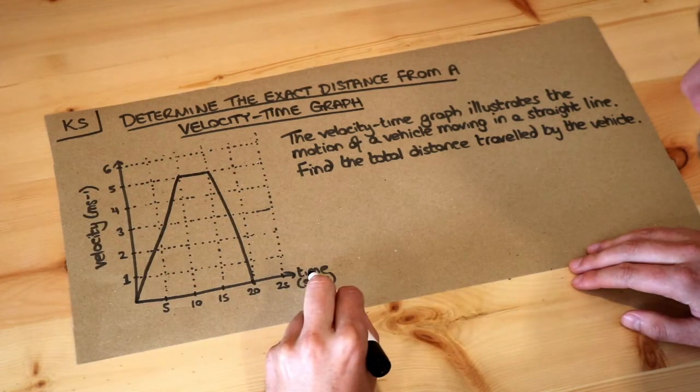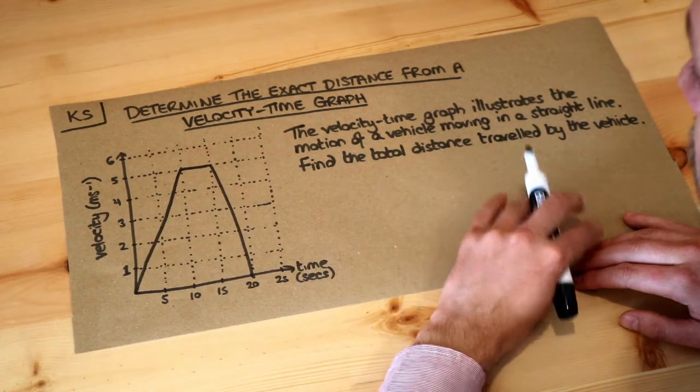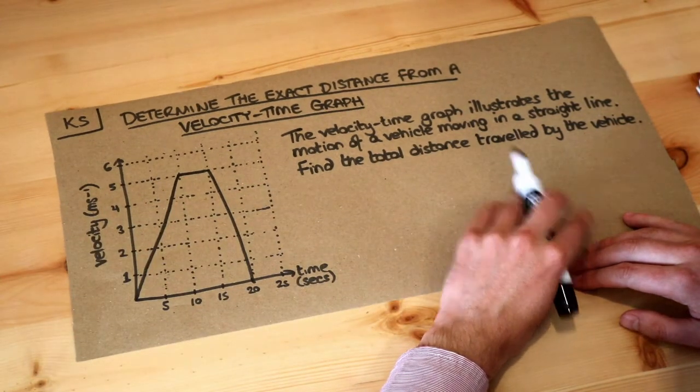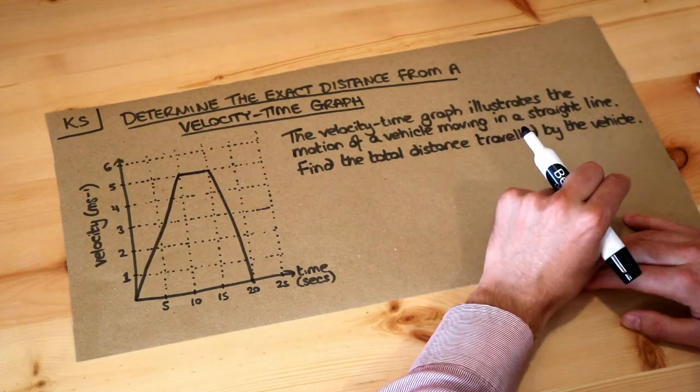So we have the time on the x-axis and we have the speed or the velocity on the y-axis. We want to find the total distance travelled by the vehicle.